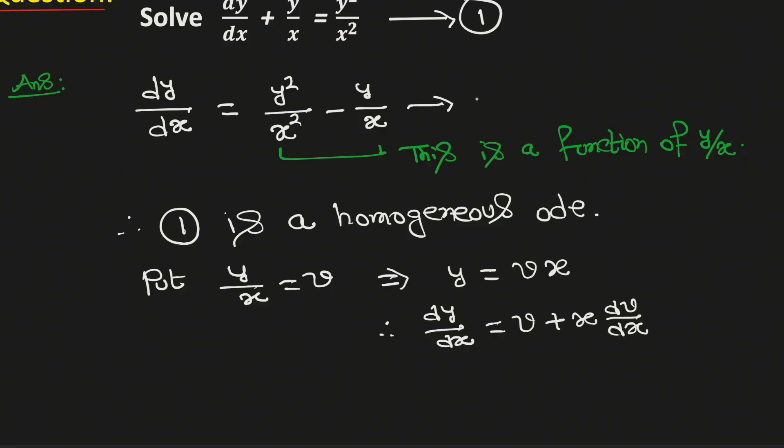Name this as equation 2. Putting these values in equation 2 we obtain that v plus x dv/dx equals v² minus v.